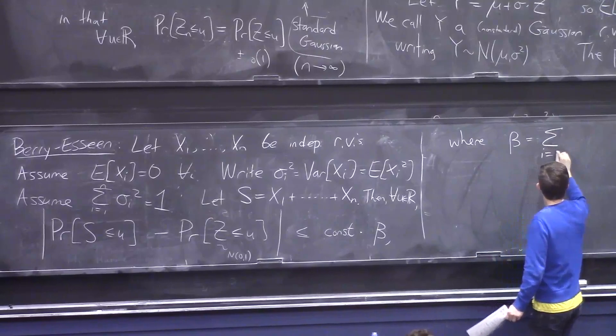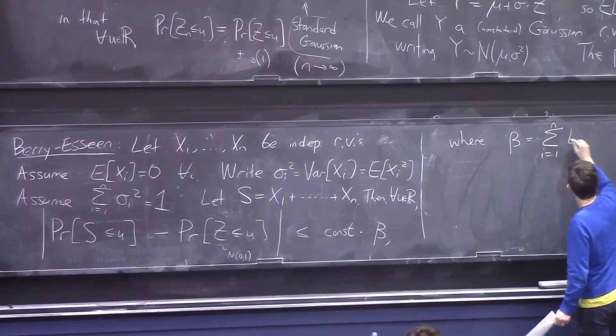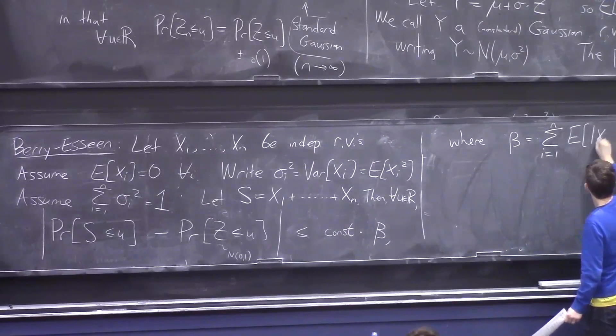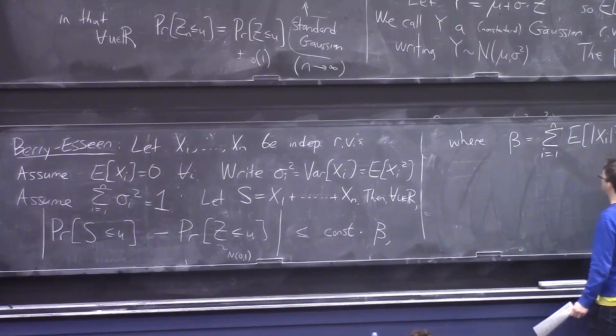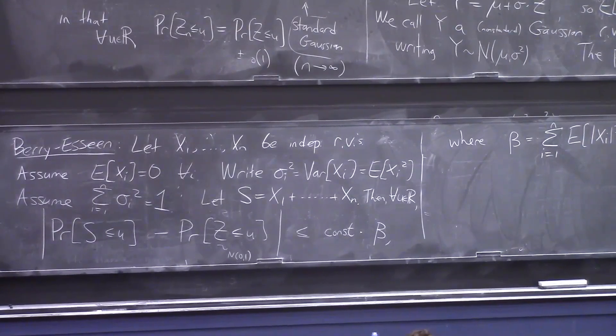Where β is this thing, sum i goes from 1 to n of the expected value, the absolute value of xᵢ cubed. Okay. We'll talk about it. But let me just say that this will usually be small, which will make you happy.